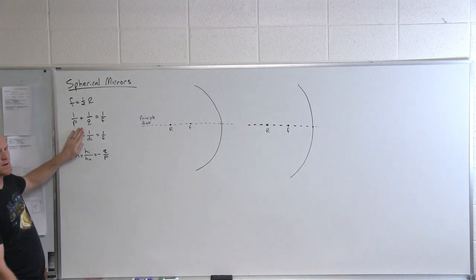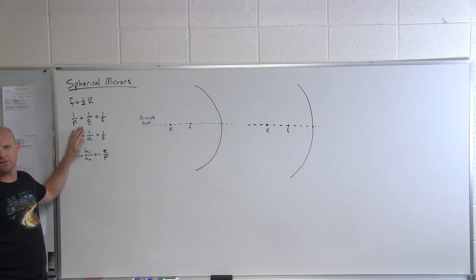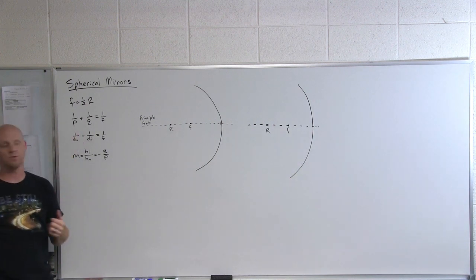And so this just kind of drops out and we find out that 1 over the distance of the image equals 1 over the focal point, which means what? The distance to the image would be the same as the focal distance. So what we're saying is that the image would actually form at the focal point.